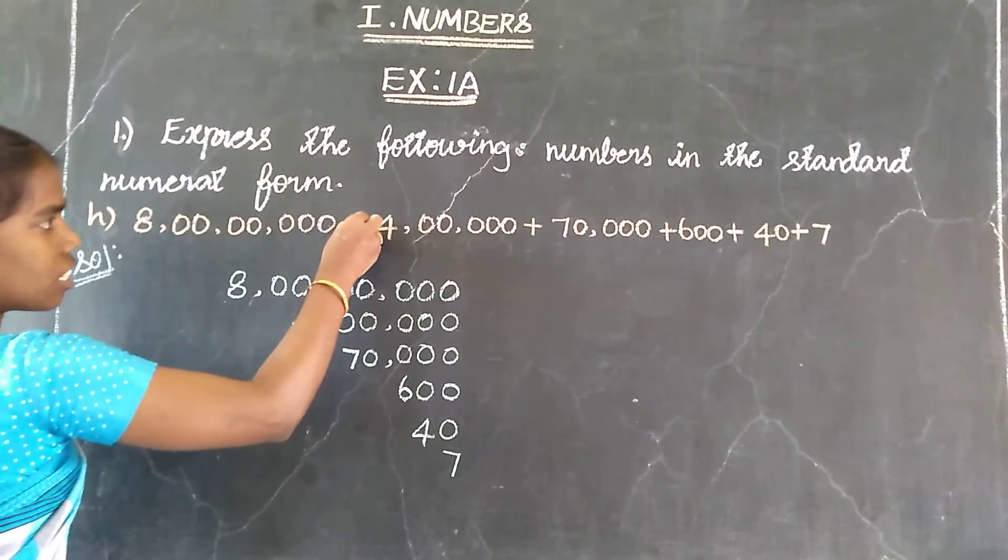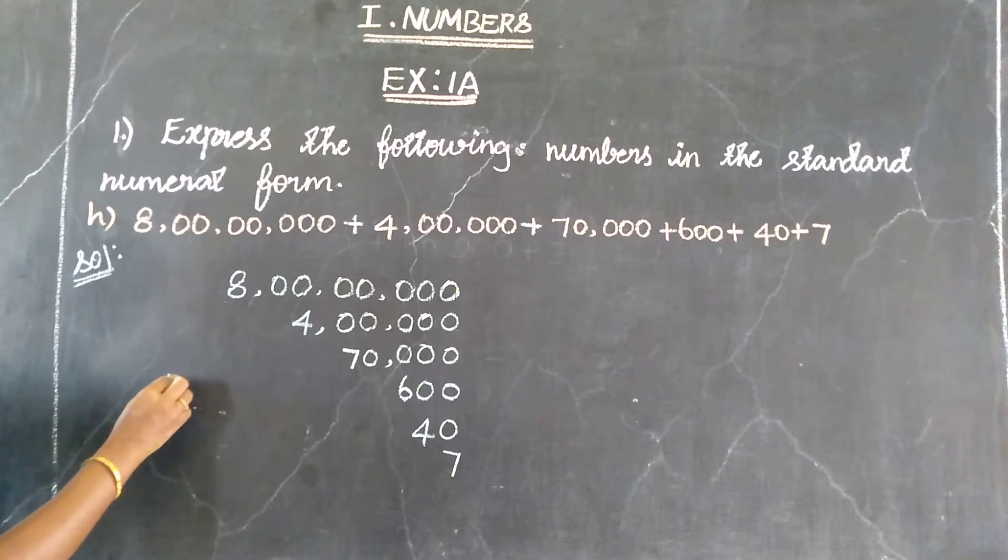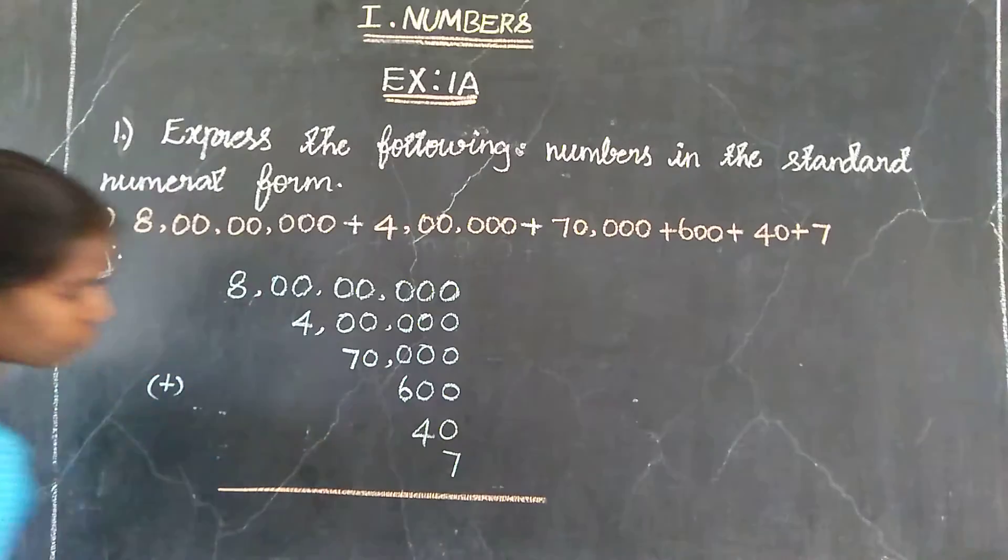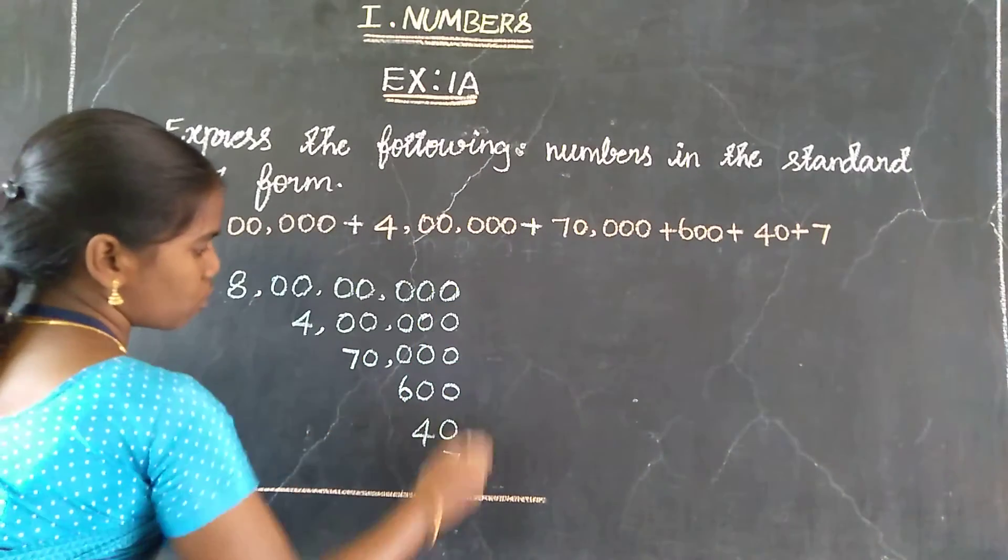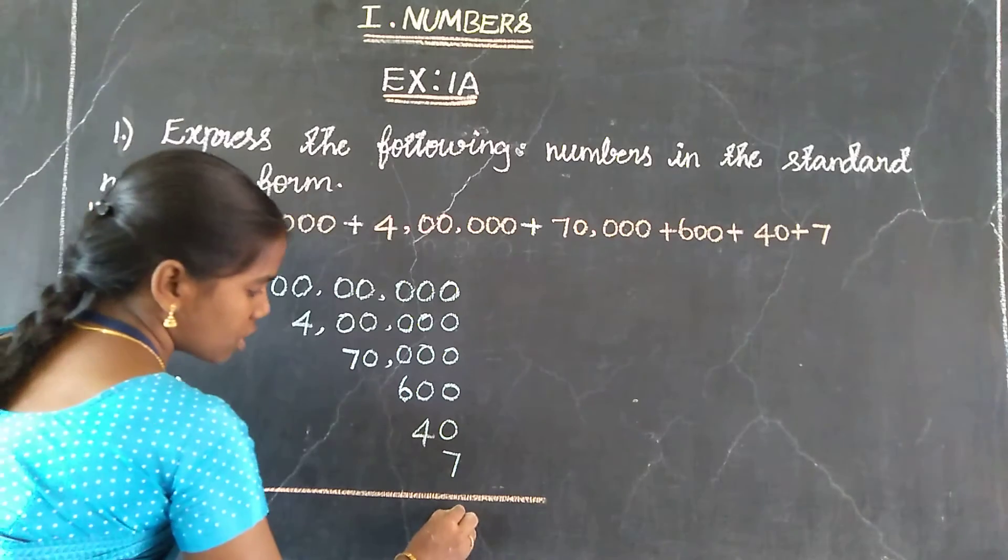All values, just add. 7 plus 0, so 0 with any value added, it is the same value: 7. Next, 4 plus 0: 4.